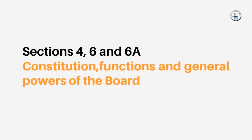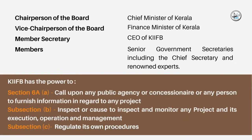Section 4, 6 and 6.A. of KIF Act contains the constitution, functions and general powers of the board. The Chief Minister of Kerala is the Chairperson of the board. The Finance Minister of Kerala is the Vice Chairperson. The Chief Executive Officer of KIF-B is the Member Secretary. Other members are Senior Government Secretaries, including the Chief Secretary and renowned experts.